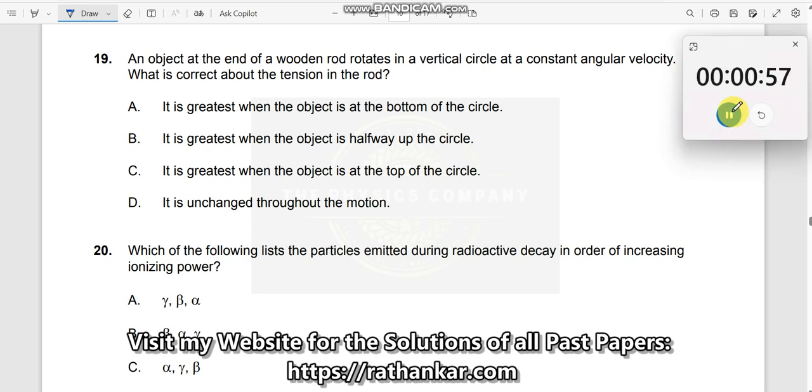Question number 19. An object at the end of a wooden rod rotates in a vertical circle at a constant angular velocity. So let us have a wooden rod like this. An object at the end of a wooden rod, this is an object at the end of a wooden rod, pivoted over here, moves with a constant angular velocity.